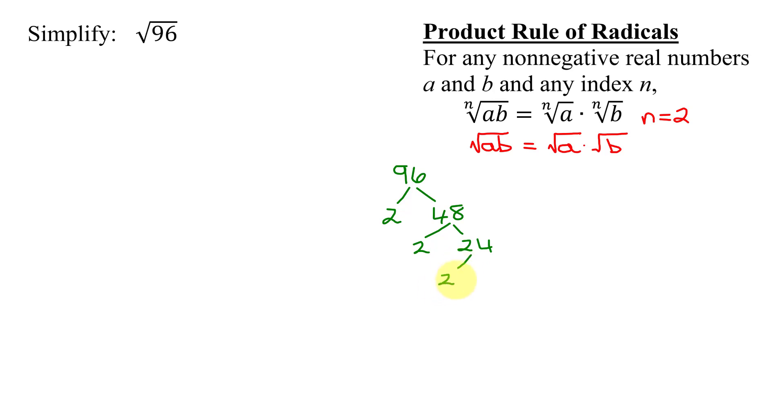2 goes into 48 24 times. Still even. 2 goes into 24 12. Keep going. 12 is even. 2 divides into 12 6 times. And 2 divides into 6 3 times. So here are my prime factors of 96.